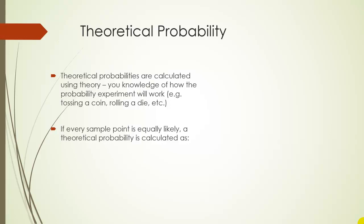So if each sample point is equally likely, which is really how you should design your sample points, then the probability of event E is the number of ways you can get event E divided by the total number of possible outcomes.